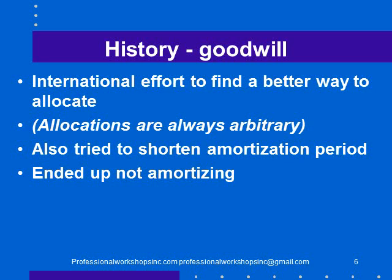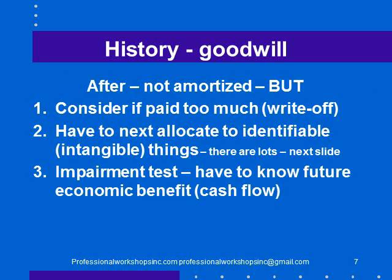There was an intention to shorten the amortization period to something like 20 years, but in a sudden and dizzying U-turn the standard setters decided not to amortize goodwill at all. If you want to research why that happened, you can. After that change, goodwill is no longer amortized.